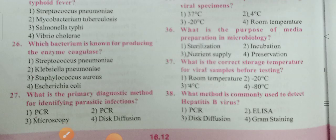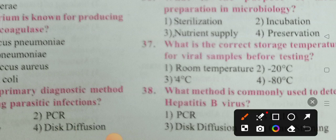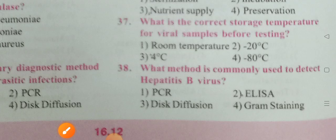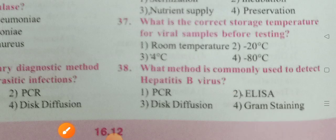Next question: What is the correct storage temperature for viral samples before testing? The answer is 4 degrees centigrade. Next question: What method is commonly used to detect the Hepatitis B virus? The options are PCR, ELISA, disc diffusion, and gram staining. Option 2, ELISA test, is the correct answer — ELISA is mainly used to detect the Hepatitis B virus.